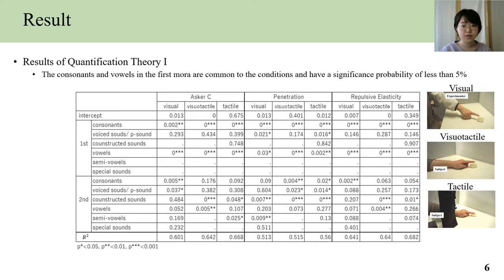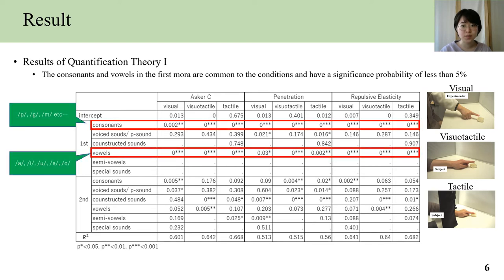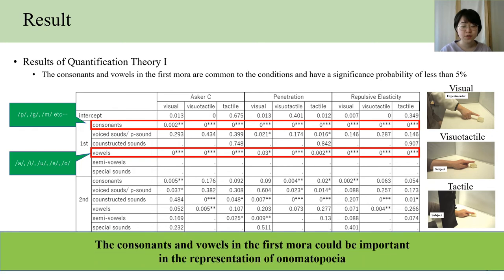The results show that the consonants and vowels in the first mora are common to the conditions and have a significance probability of less than 5%, which could be important in the representation of onomatopoeia.